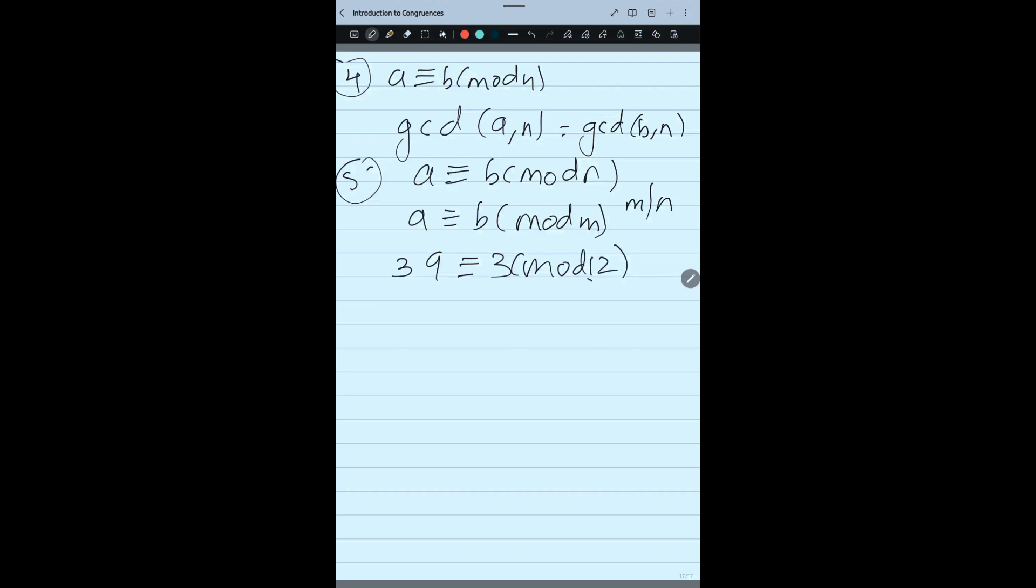For example, if I write 39 congruent 3 mod 12, now 4 divides 12, that is M, right? So I can also write 39 congruent 3 mod 4. Also I can write mod 6, mod 3. All I can write because those numbers are dividing 12, so I can write like that.